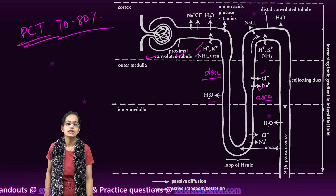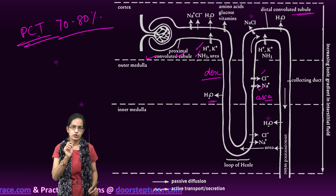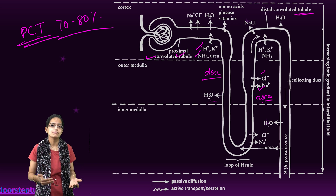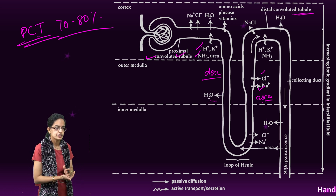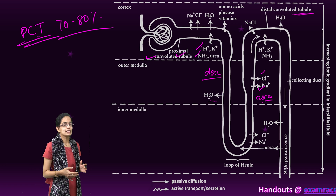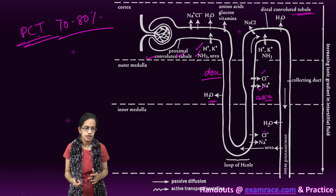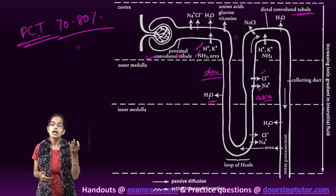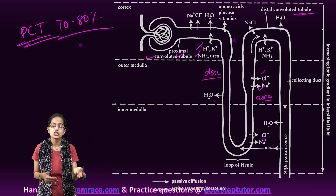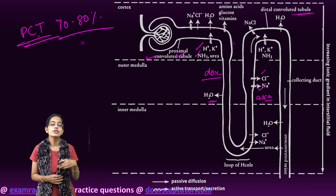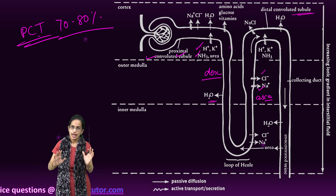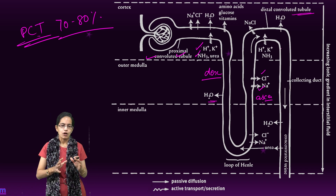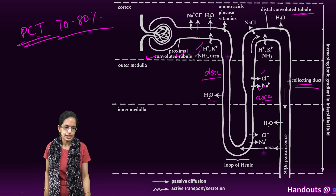In the DCT, the distal convoluted tubule, there is conditional reabsorption of sodium ions along with reabsorption of carbonates, and there is selective secretion of hydrogen ions, potassium ions, and ammonia into the filtrate in order to maintain the ionic and acid-base balance of the body fluid. Finally, the DCT connects with the collecting duct.